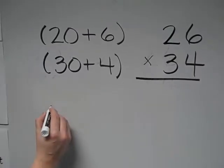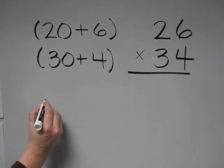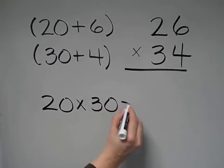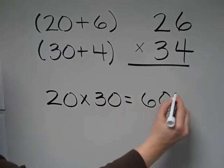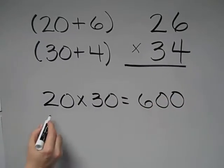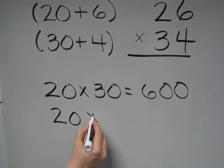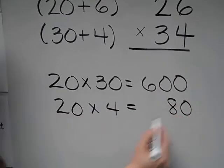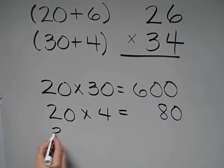Step three: multiply each part. 20 times 30. 20 times 30. 20 times 4. 30 times 6.